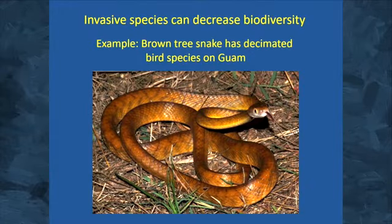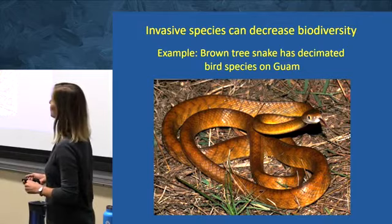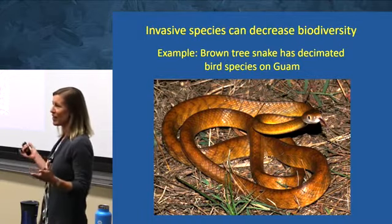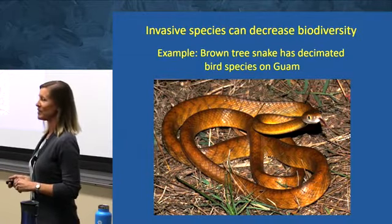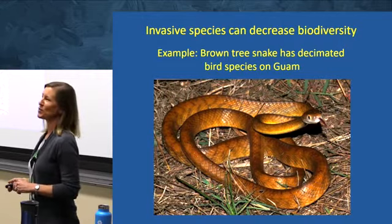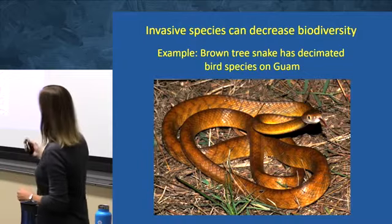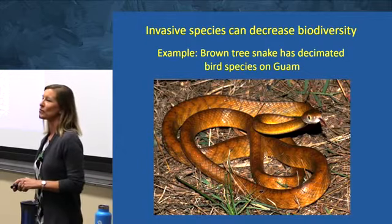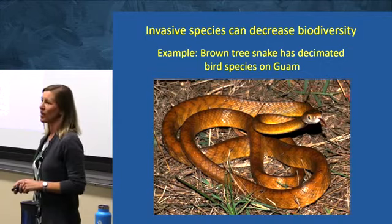Invasive species can decrease biodiversity. One of my favorite examples is the brown tree snake, which was introduced accidentally to the island of Guam — it hitched a ride on a military plane. When it got there, it had no predators and just feasted on all the bird species. I've heard it's eerie with no birds present at all. They keep finding brown tree snakes on planes coming from Guam to other islands like Hawaii, so it could spread further.